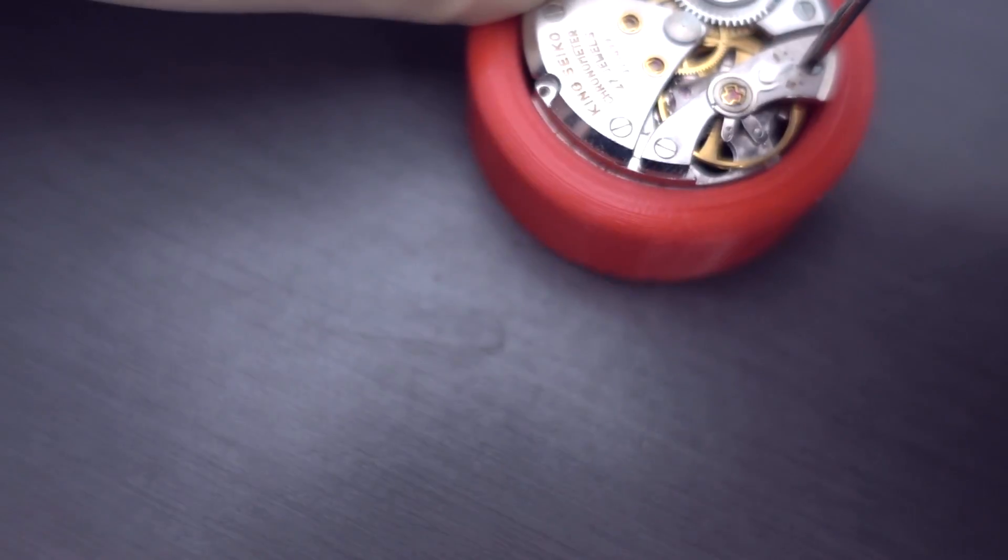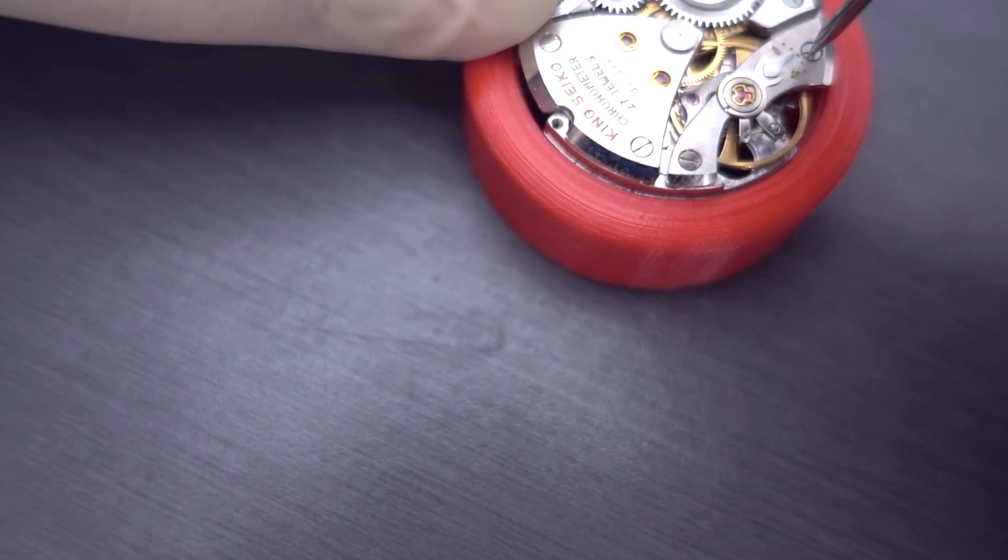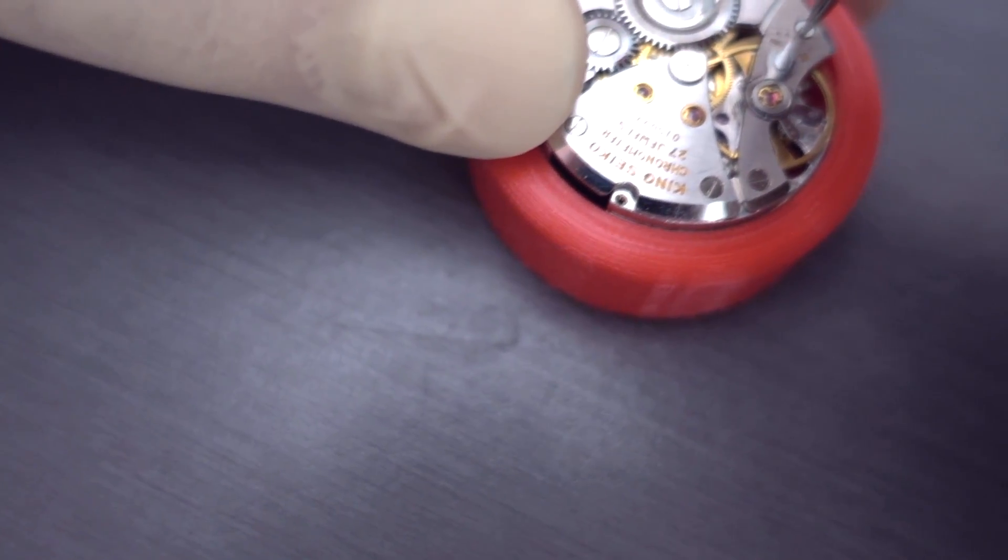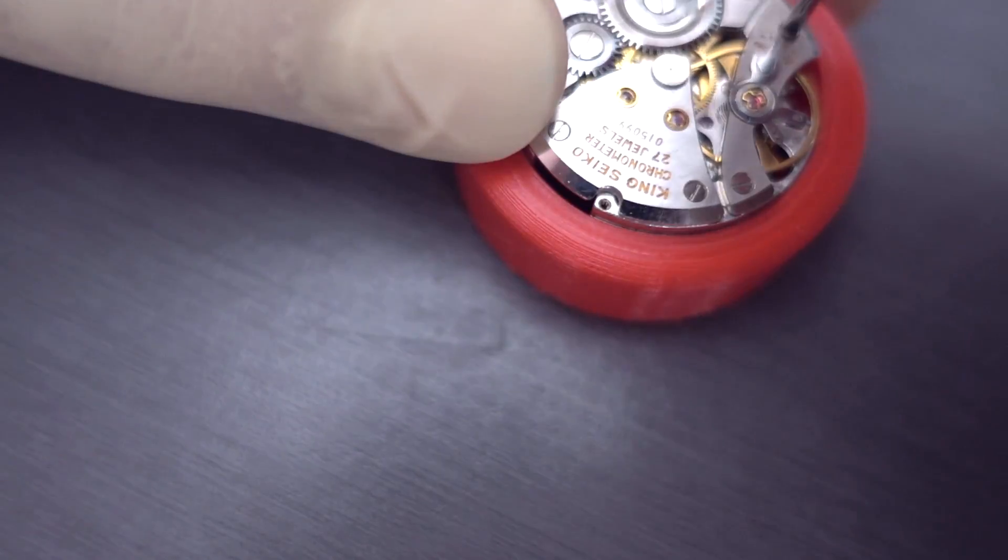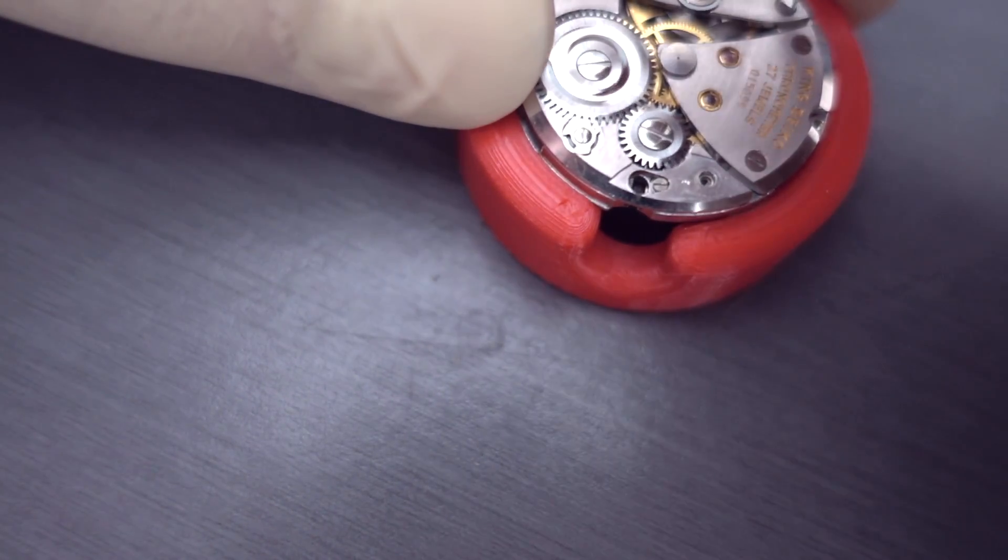So I'm just going to remove the balance now because I really don't want to damage that. If I damage that, basically, I'm going to have a bad time trying to find another one. And the screws are excessively tight.